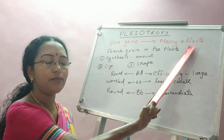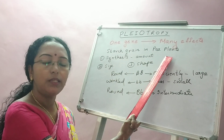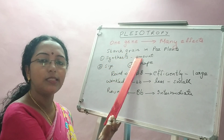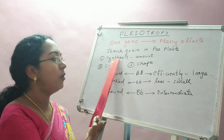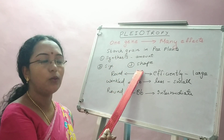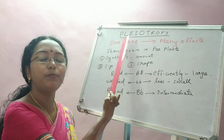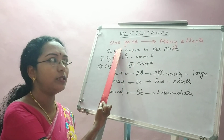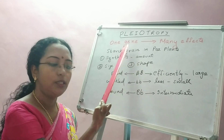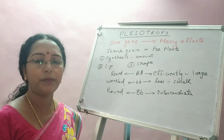Let's go back to the pea plant itself. Here we are taking one gene which is controlling more than one effect. Those effects are the starch grain synthesis in the pea plant, the amount of starch grain synthesized, the size of the starch grain, and the shape of the seed. All three effects are controlled by one gene — that is pleiotropy. Such a gene is called a pleiotropic gene: a gene which is able to control more than one effect.